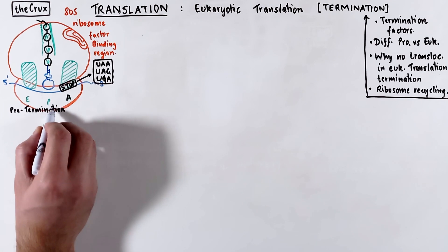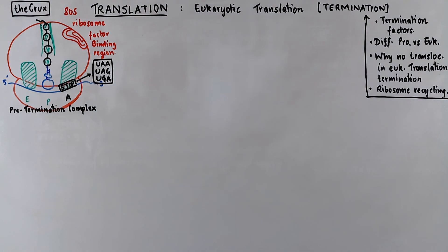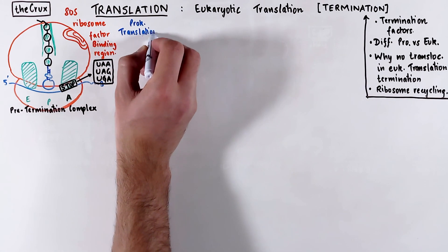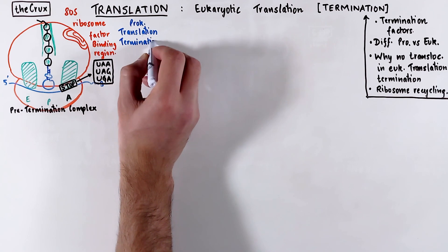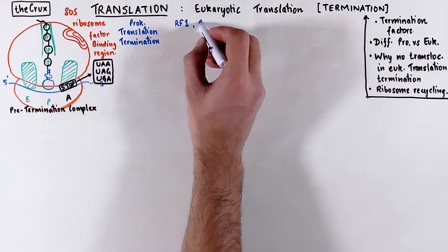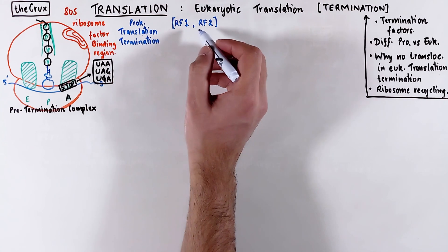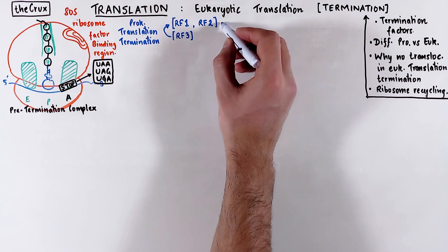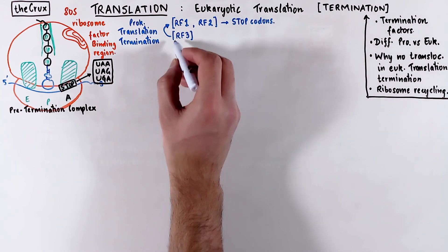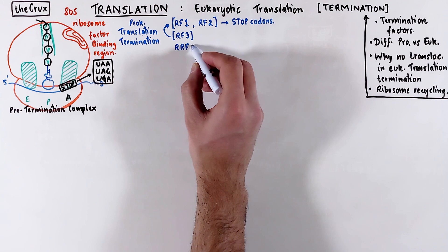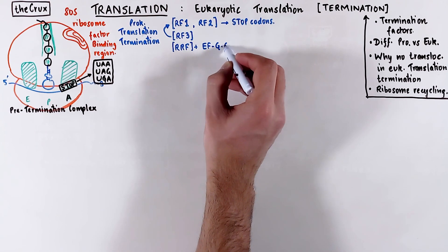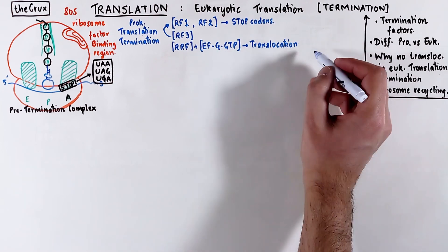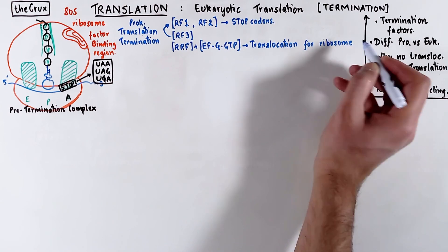Before we dive into the process of termination, let's talk about the key players of the mechanism, which are the termination factors. In prokaryotes, we saw that there are two class 1 termination factors, RF1 and RF2, and one class 2 factor named RF3, which helps in the proper functioning of class 1 factors. The class 1 factors have the job of recognizing stop codons. We also saw ribosome recycling factor and elongation factor G, which enables a translocation step in the termination of the ribosome, leading to ribosome disassembly.